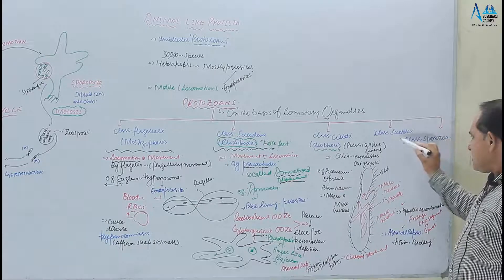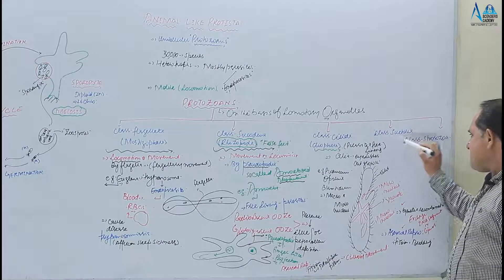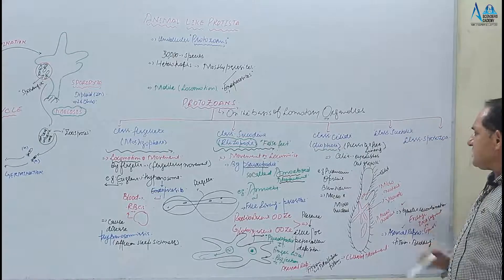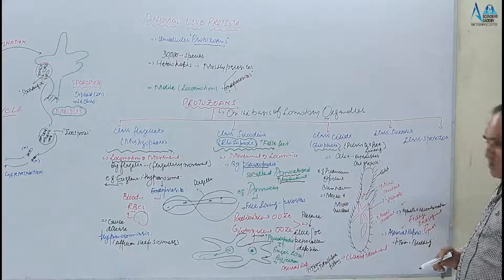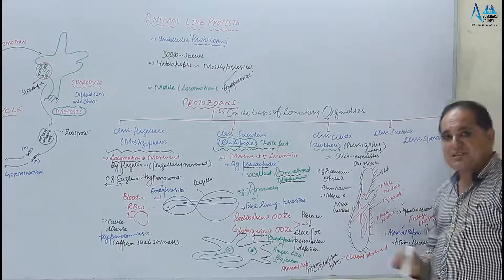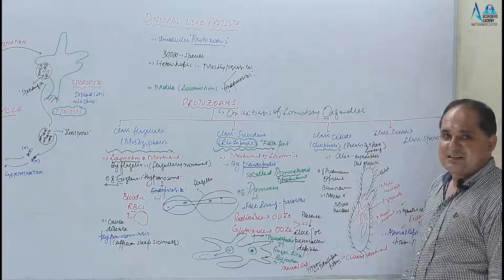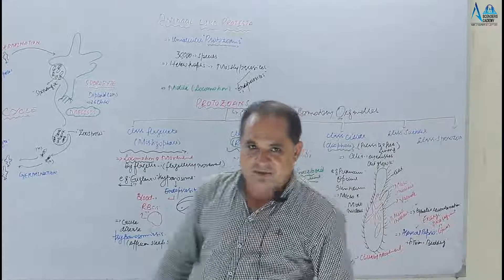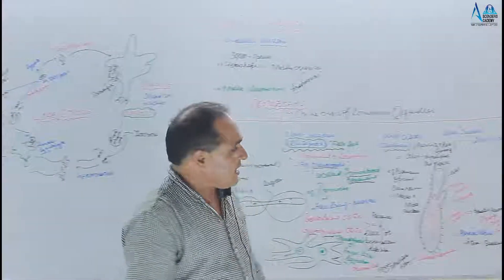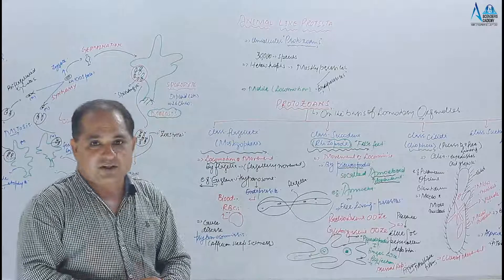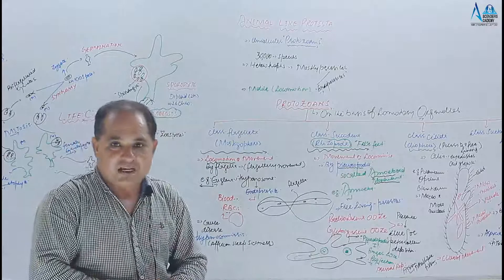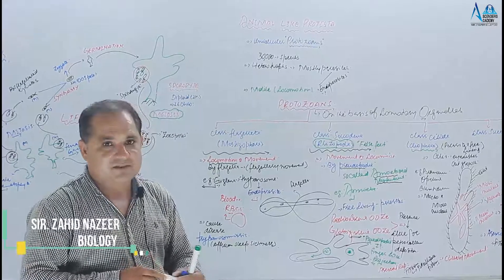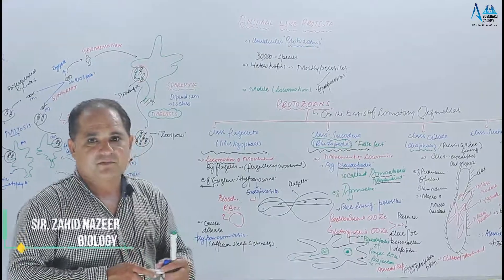Next class mein inshallah hum discuss karenge class number four — Suctoria — aur class number five — Sporozoa. Usme hum life cycle of Plasmodium bhi discuss karenge. Thanks.